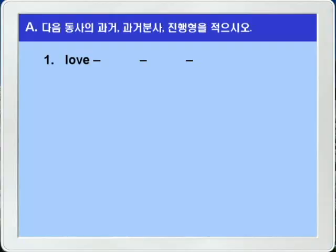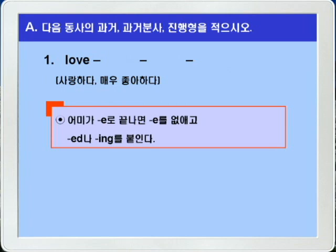A번, 다음 동사의 과거, 과거 분사, 진행형을 적으시오. 1번, love. Love는 사랑하다 혹은 매우 좋아하다라는 뜻으로 규칙 변화를 하는 동사인데, 어미가 E로 끝나니까 E를 없애고 ED와 ING를 붙이면 됩니다. 따라서 과거형은 loved, 과거 분사형도 loved, 진행형 즉 현재 분사형은 loving이 되겠습니다.